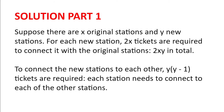Solution. Suppose there are x original stations and y new stations. For each new station, 2x tickets are required to connect it with the original stations. For y new stations, that is 2xy tickets in total. To connect the new stations with each other, y multiplied by y minus one tickets are required, because each new station needs to connect to each of the other stations.